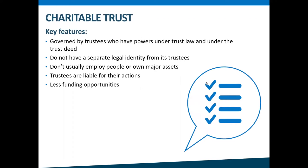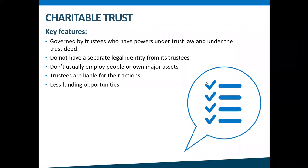The key features are that charitable trusts have trustees who govern the trust and have various powers under trust law and the trust deed. A charitable trust does not have a separate legal identity from its trustees and they don't usually employ people or own major assets. The trustees are liable for their actions, although most trustees would include a clause to protect the assets of the trust. If there is a breach of trust arising from the trustee's dishonesty, willful misconduct, or gross negligence, then the trustee will be liable. These trusts may have fewer funding opportunities as they're not incorporated, and often we find these types of trusts on the charities register in the form of a will or a scholarship.